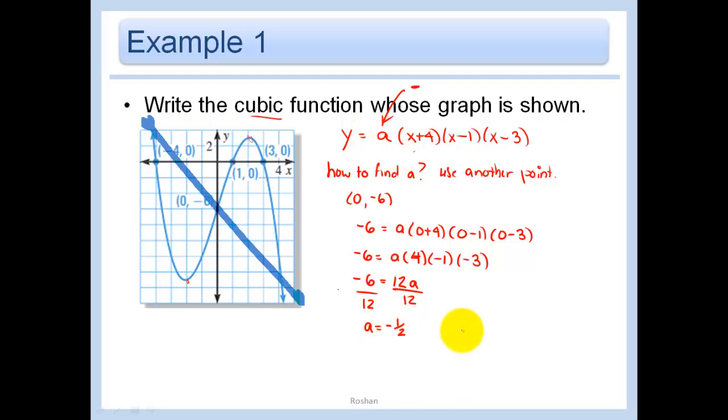And so my final equation is just going to be y = -1/2(x + 4)(x - 1)(x - 3). Did it check out that my leading coefficient was negative? It sure did. Alright, I'm good to go.